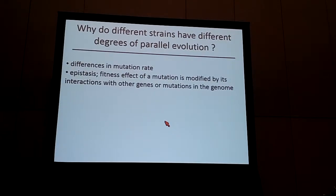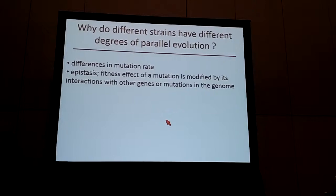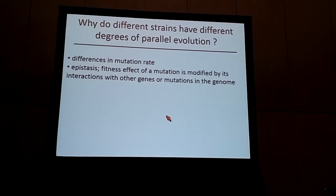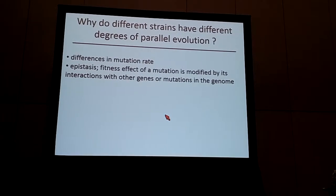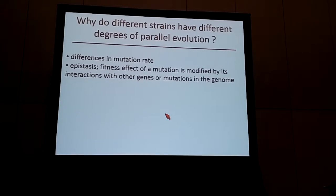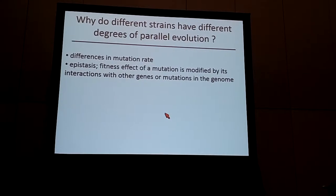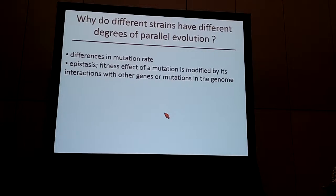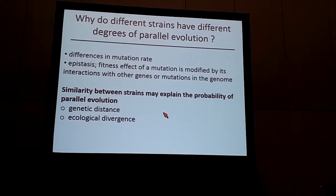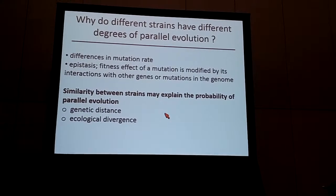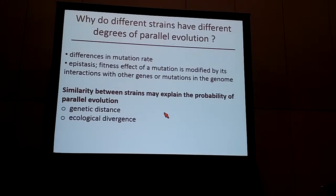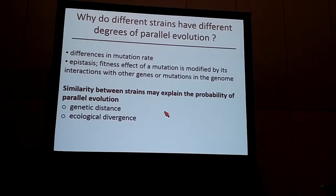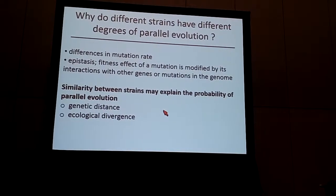Why might different strains have different degrees of parallel evolution? They could have differences in mutation rate, either across the whole genome or at different genes of interest. There could also be epistasis — meaning the fitness effect of a mutation is modified by its interactions with other genes or mutations in the genome. So a resistance mutation would interact with different genetic backgrounds differently, being costly in some cases and beneficial in others. Similarity in parallel evolution could also be explained by differences in genetic distance, or ecological divergence.